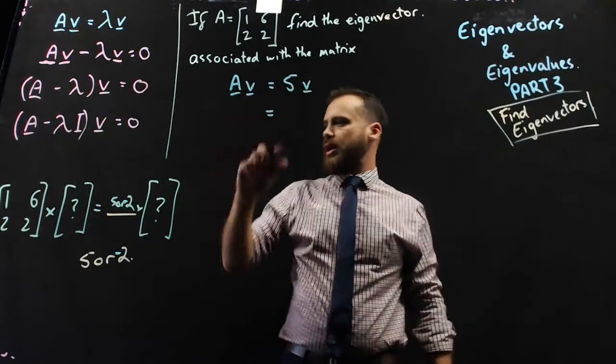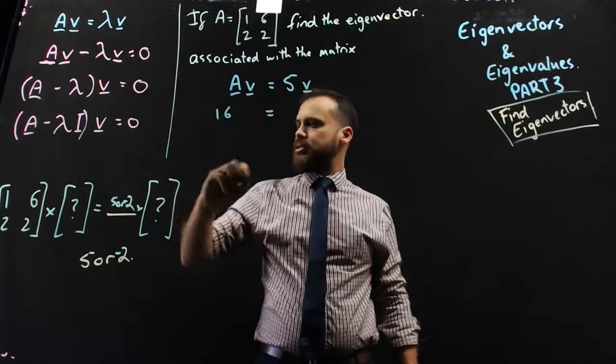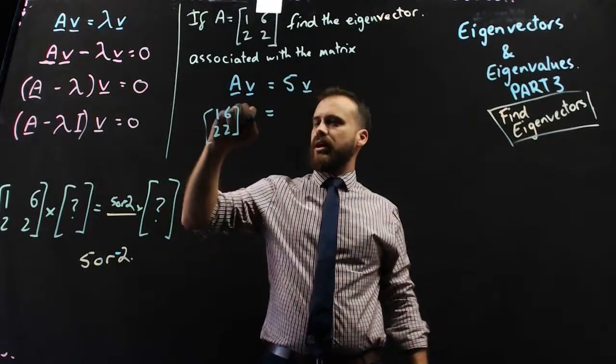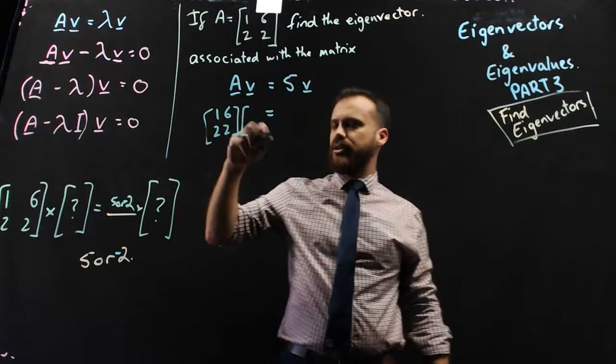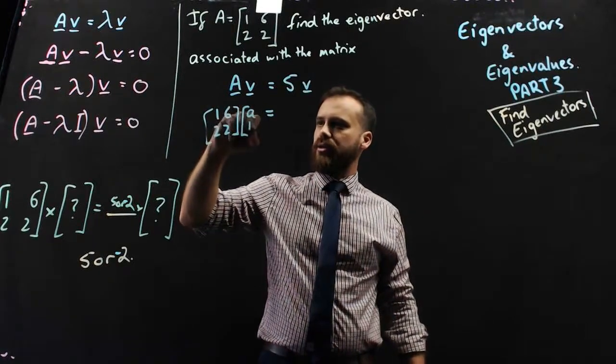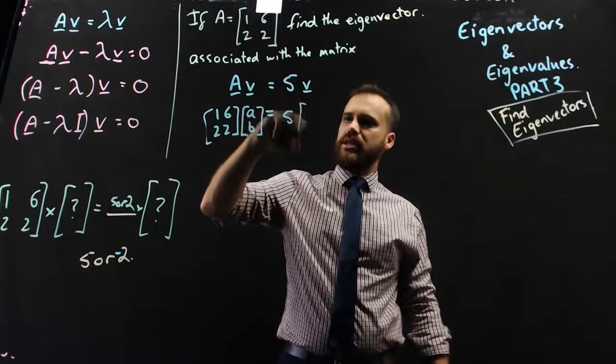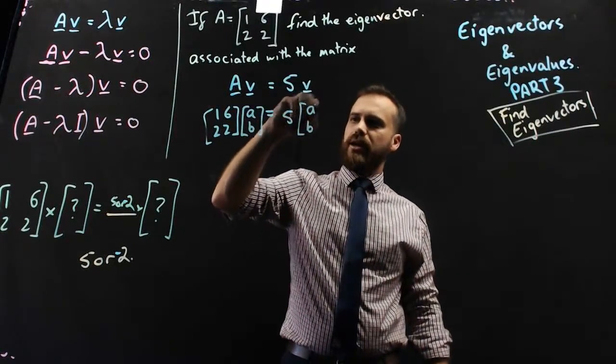Now the A value in this case is 1, 6, 2, 2 as a vector. And the v is going to be some unknown 2 by 1, so a, b. And that's going to be equal to 5 times some unknown a, b.